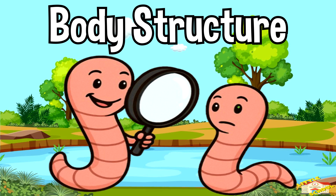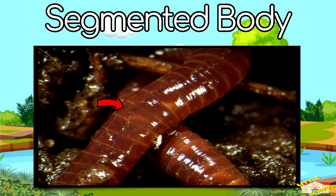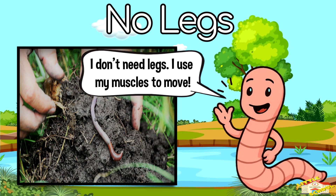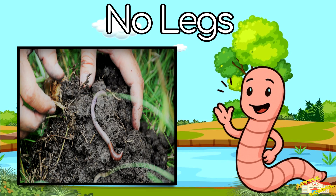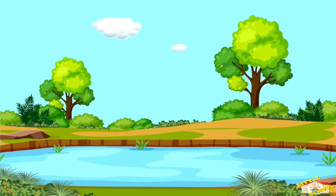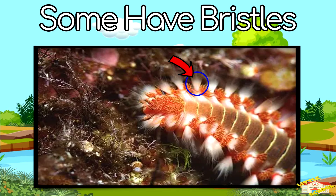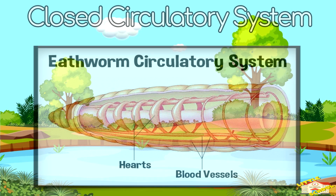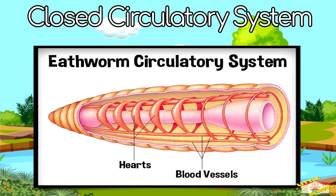What is the body structure of annelids or segmented worms? They have a segmented body — they look like a string of little rings. They have no legs; they move by stretching and squeezing their muscles. Some have bristles called setae, which help them move through dirt or water.